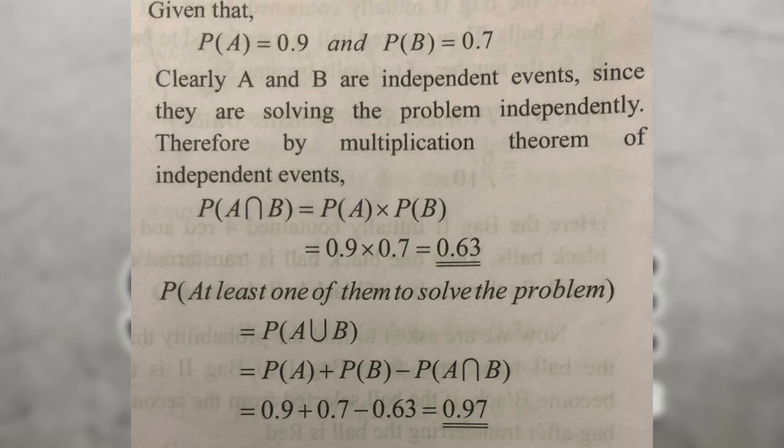We need to find the probability that at least one of them solves the problem, which means we need P of A union B, where A is the event that A solves and B is the event that B solves.